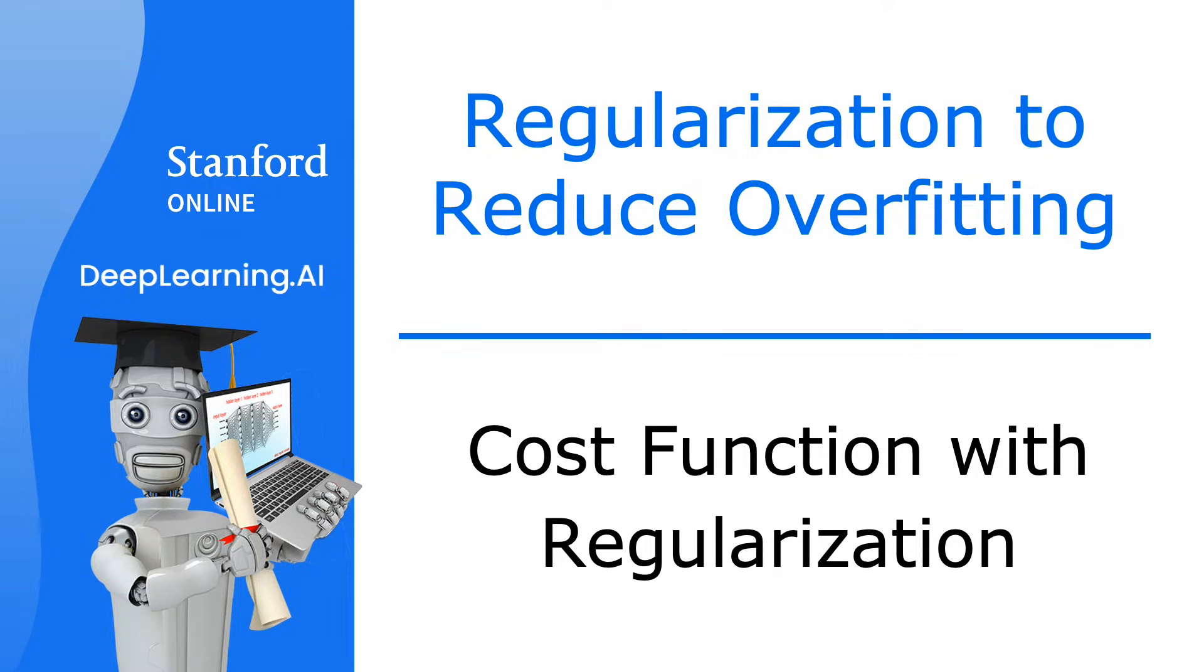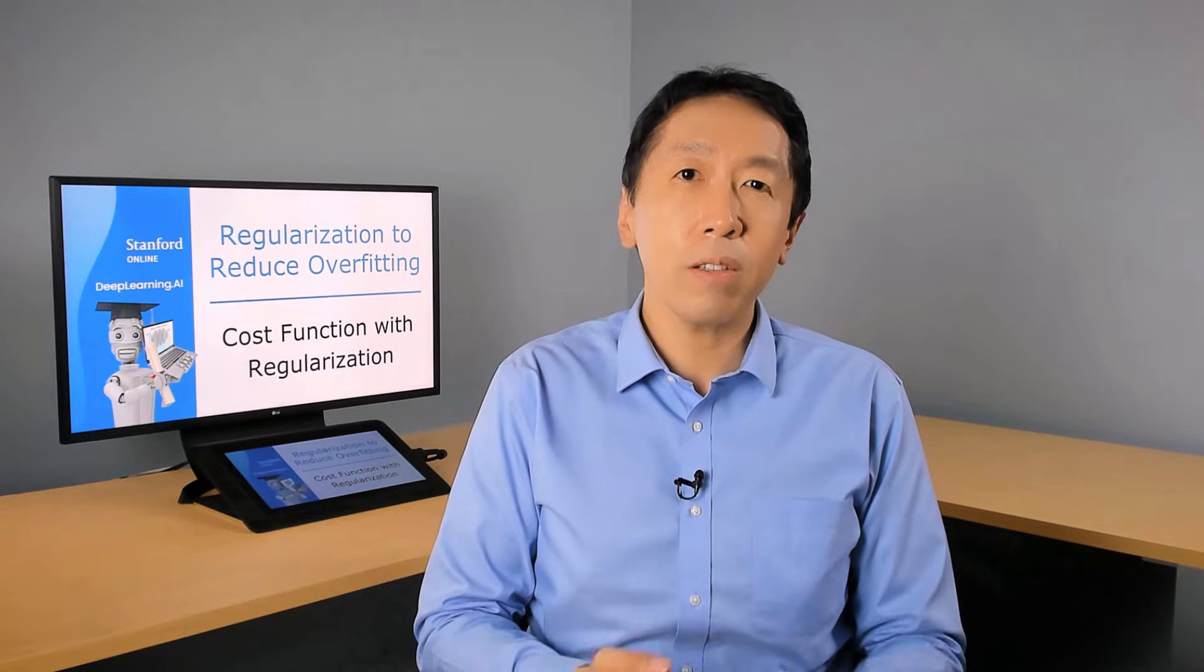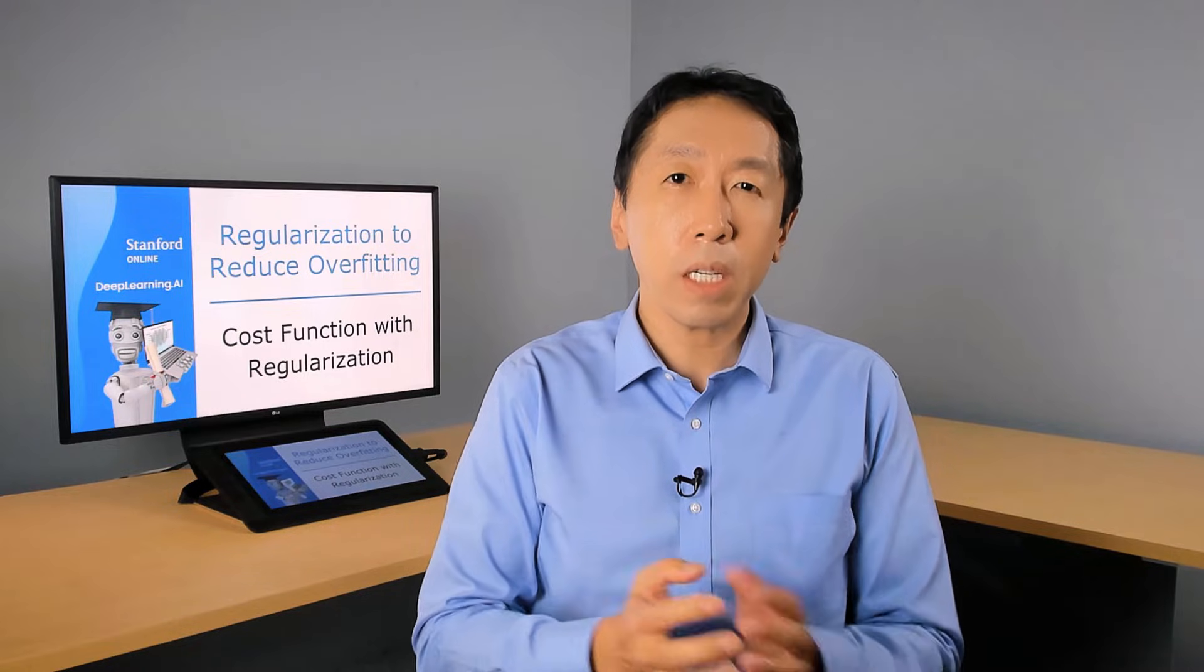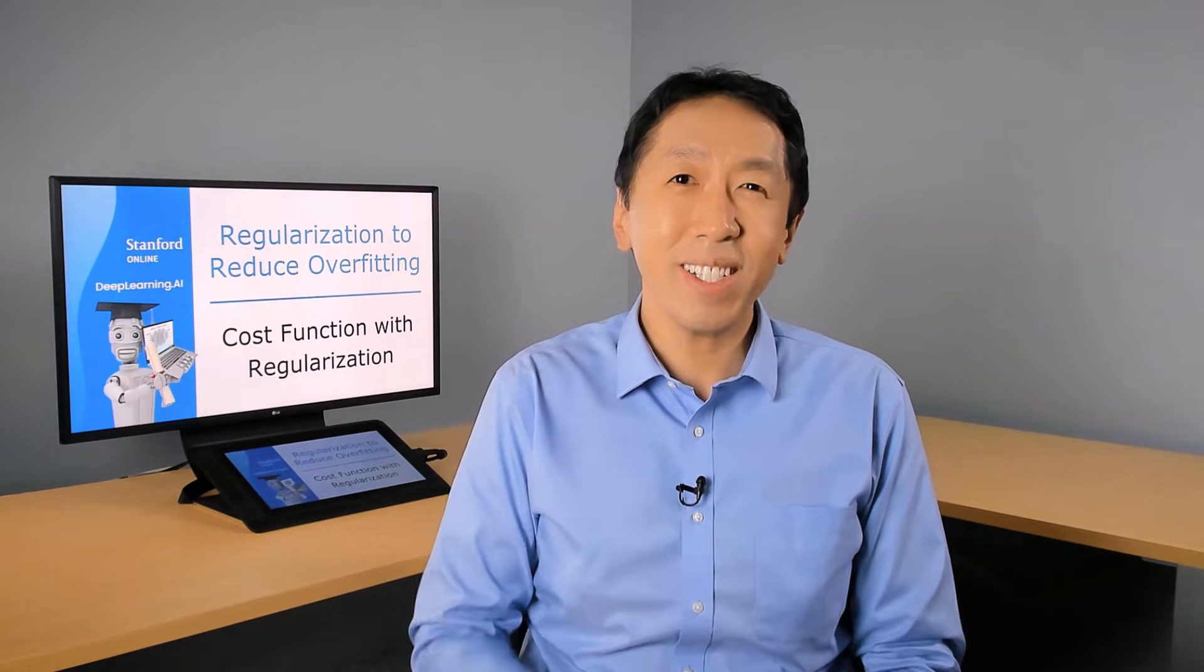In the last video, we saw that regularization tries to make the parameter values w1 through wn small to reduce overfitting. In this video, we'll build on that intuition and develop a modified cost function for your learning algorithm that you can use to actually apply regularization. Let's jump in.